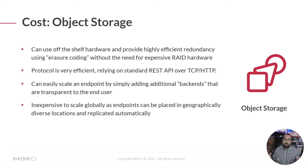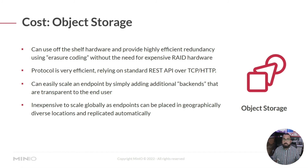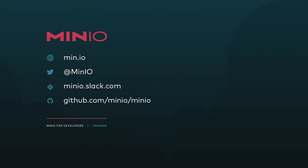Lastly, it's inexpensive to scale object storage globally, as endpoints can be placed in geographically diverse locations and replicated automatically. For example, if you had a front-end object storage interface at storage.myorganization.org, you could replicate all data to multiple object storage points around the globe. When users hit that endpoint, geolocation can route them to the fastest one regardless of where they are. This makes it really economical and efficient for organizations to scale out globally.